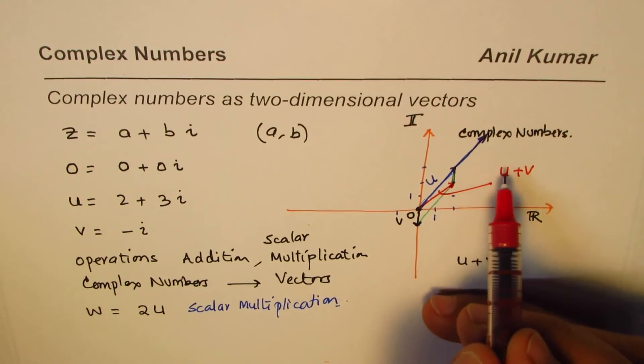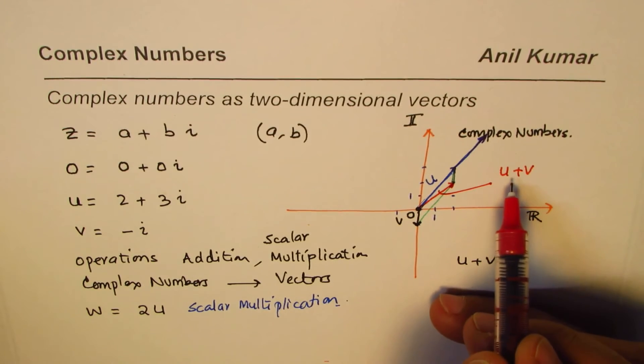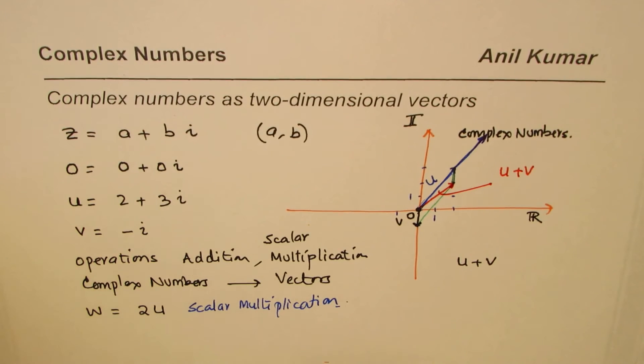Most of the time for vectors we put a bar here or we write these letters in bold letters. So you could imagine if we write these complex numbers and use them as vectors, you can fairly do it. And these operations which you've learned for vectors are applicable to complex numbers. And the concepts which you learn in complex numbers will be equally applicable to vectors. So that's kind of a close relationship between these two. We are going to explore these relationships in coming videos.